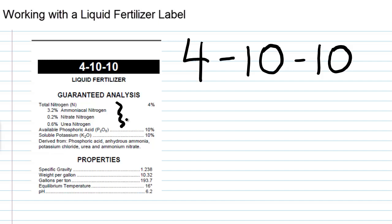You see that right there, ammoniacal, nitrate, and urea nitrogen. And it's 10% by weight available phosphoric acid, 10% by weight soluble potash.